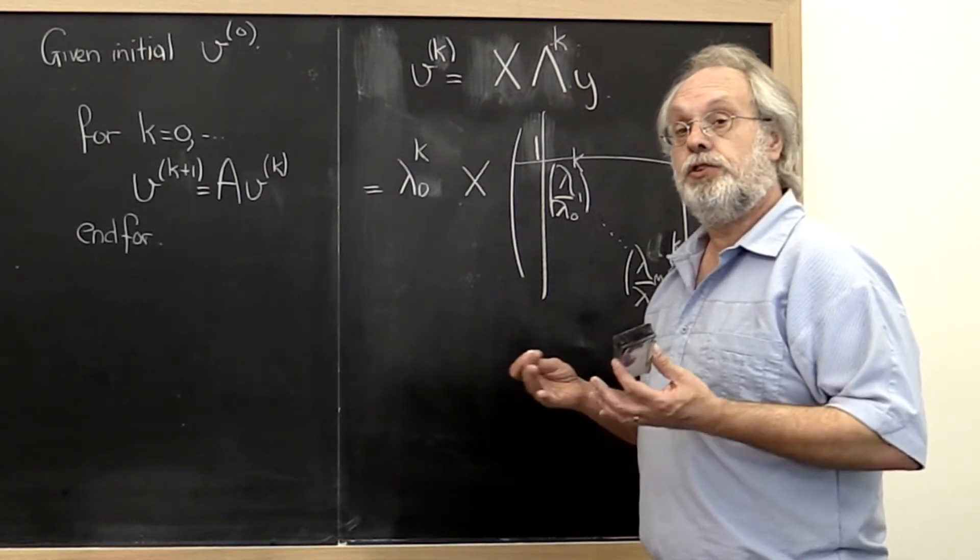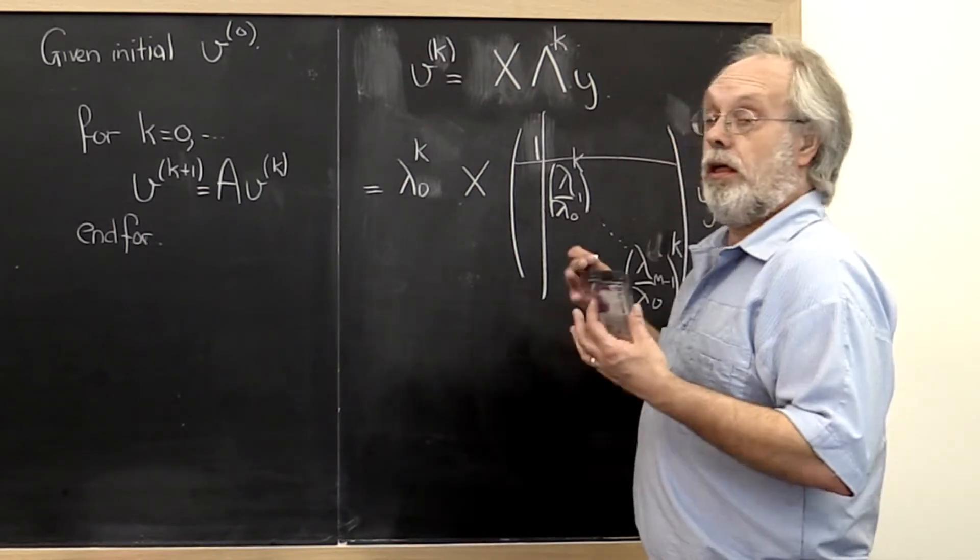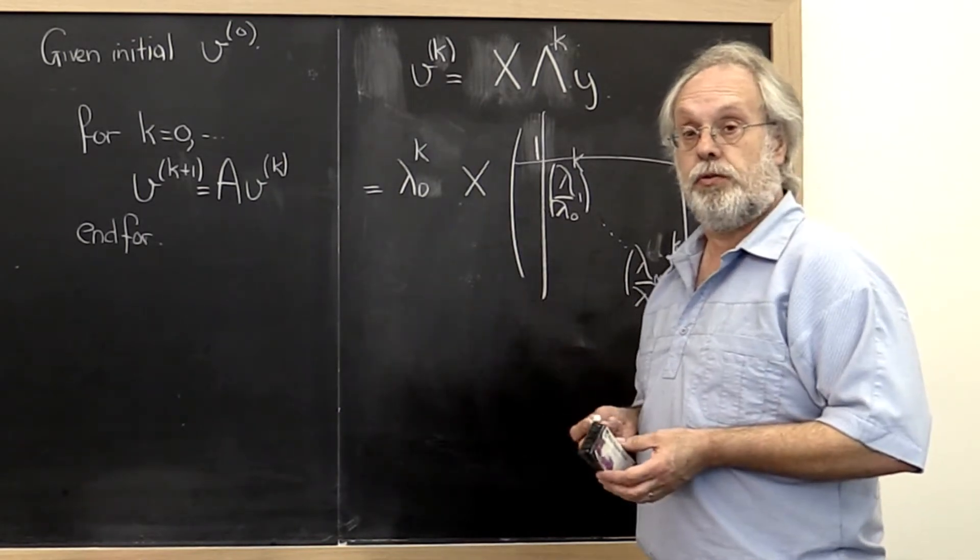If the magnitude of lambda zero is equal to 1, then actually everything works just great.